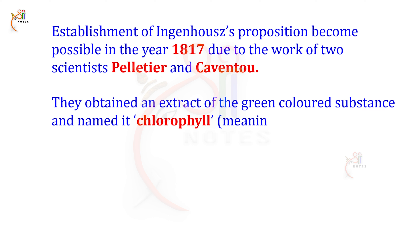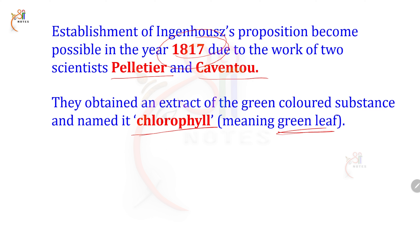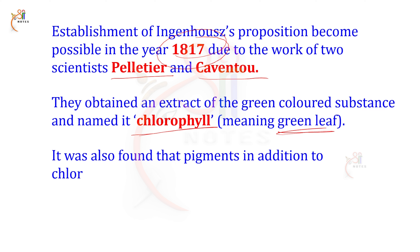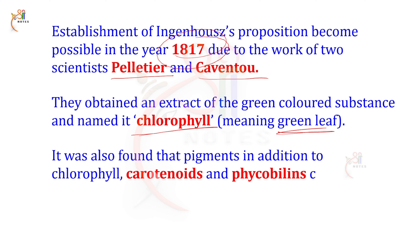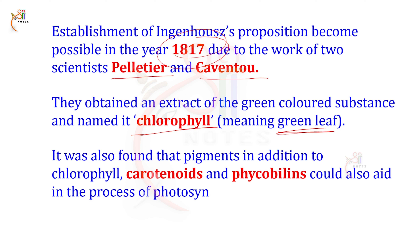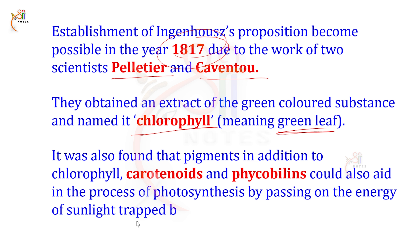Chlorophyll means green leaf. It was also found that pigments in addition to chlorophyll — carotenoids and phycobilins — could also aid in the process of photosynthesis by passing on the energy of sunlight trapped by them to chlorophyll.